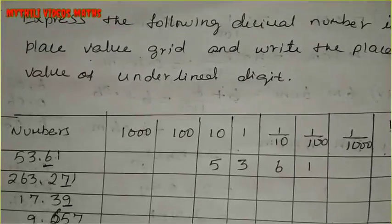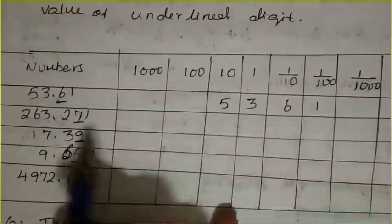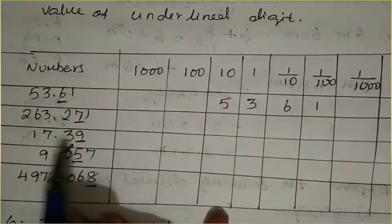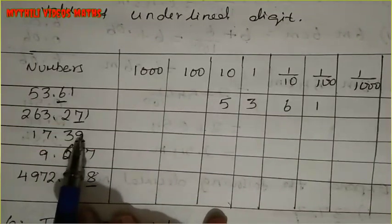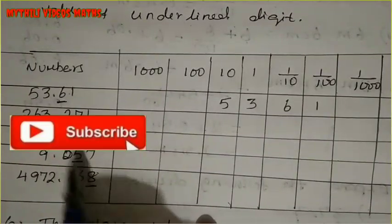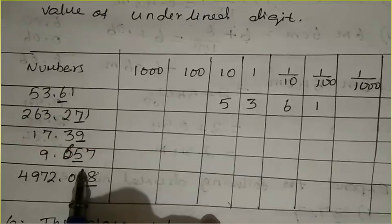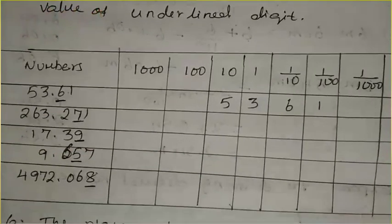So, you are given a few numbers, and one digit is underlined in each number. We will tell you the place value of that underlined digit.